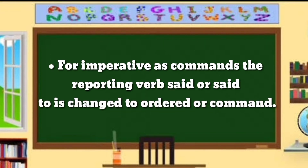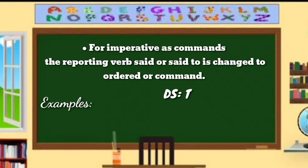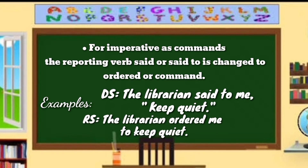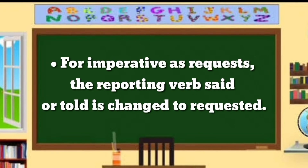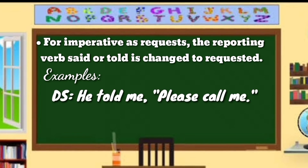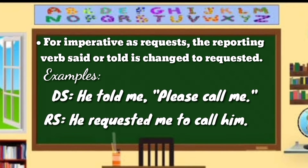For imperative and command, the reporting verb 'said' or 'said to' is changed to 'ordered' or 'commanded.' For example — DS: The librarian said to me, 'Keep quiet.' For imperative as a request, the reporting verb 'said' or 'told' is changed to 'requested.' For example — DS: He told me, 'Please call me.' RS: He requested me to call him.